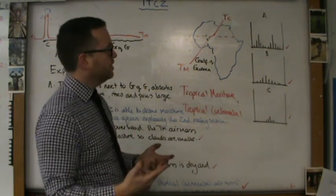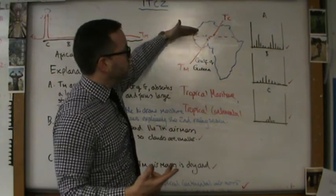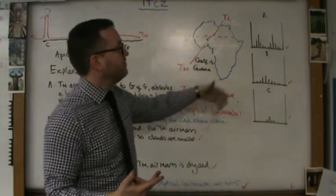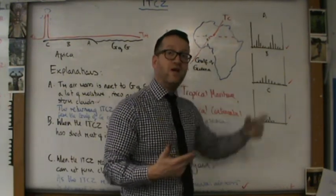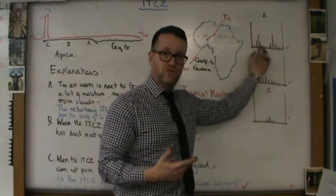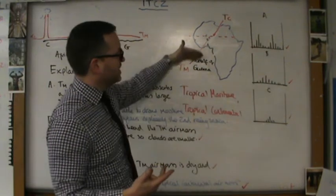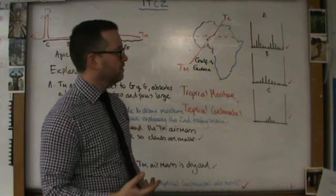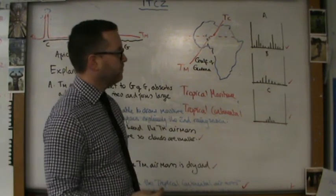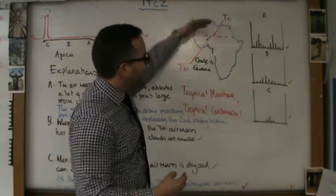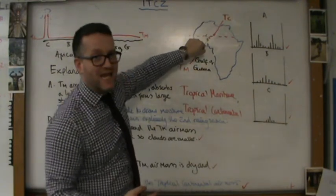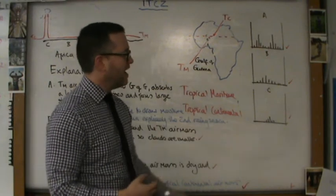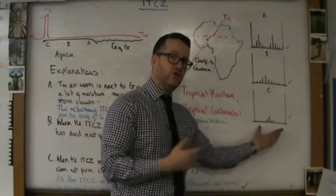The third mark winning point is the concept that this is a two-way journey. The ITCZ returns south and it visits location A twice in the year, bringing two dumps of rain as the TM air mass is able to kind of refuel over the Gulf of Guinea. Fourth major mark winning point is the idea that as the ITCZ returns south, it brings a TC air mass, a tropical continental air mass, a warm dry air mass, and that causes the drought you see at location C.